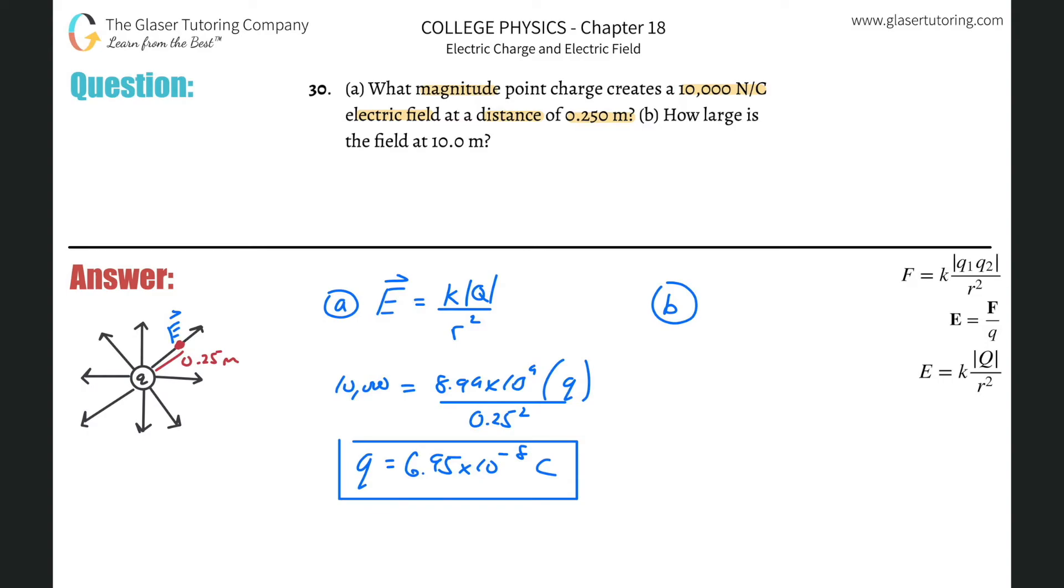All right, so how large is the field? Let's write out our formula. So the electric field strength is going to be equal to the electrostatic constant K multiplied by the absolute value of the charge that we're talking about, divided by the distance between the point at which we're trying to calculate the electric field and the charge squared.